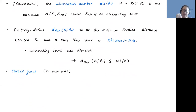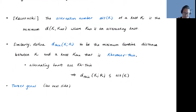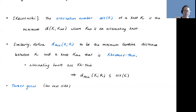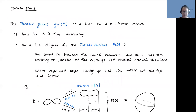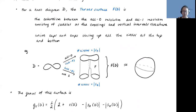There is another notion of distance between a knot and the set of alternating knots, and it's actually very different from alternation number. Turaev genus was developed to study the Jones polynomial and is also very much related to Khovanov homology, but it measures being far from alternating in a completely different way. Here's a rundown of Turaev genus G_T. We start with what a Turaev surface is.